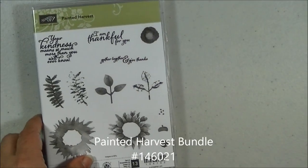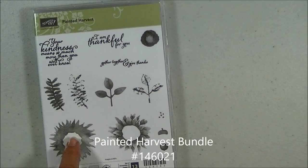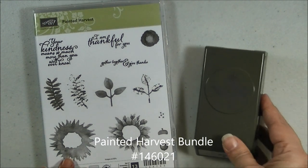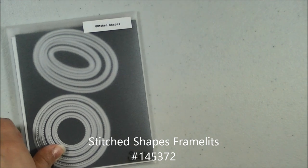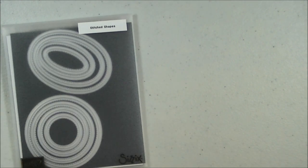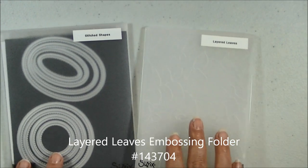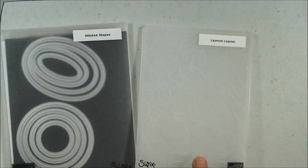For our stamp set we're using the Painted Harvest bundle, so we'll be using the leaf punch as well. We'll be using the Stitched Shapes Framelits dies along with the Layered Leaves embossing folder.